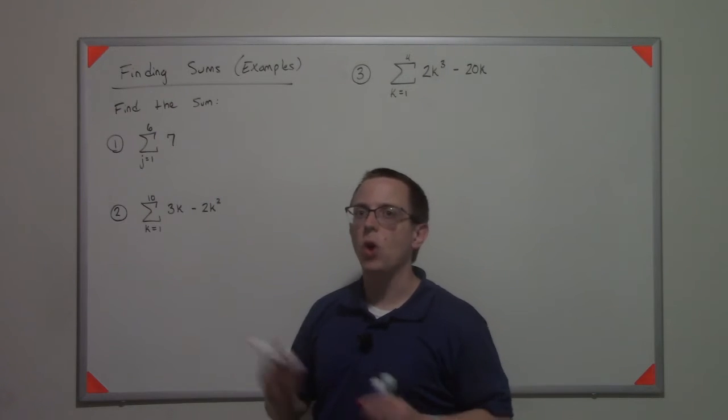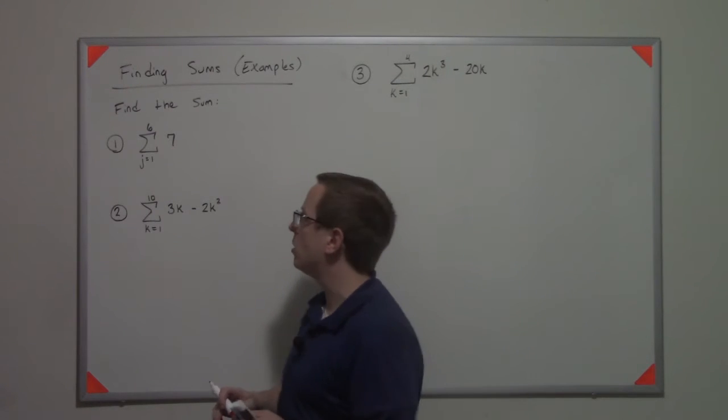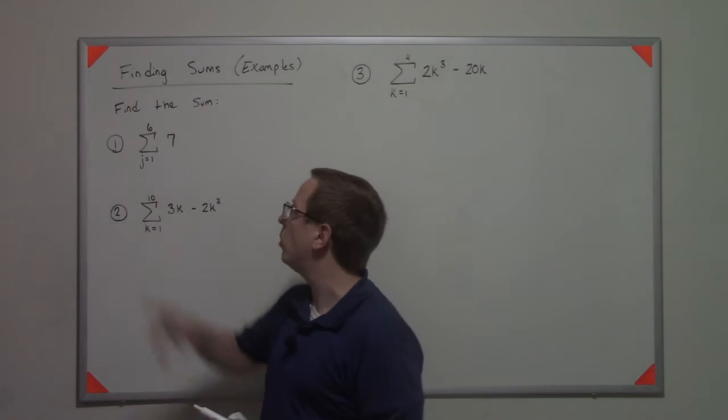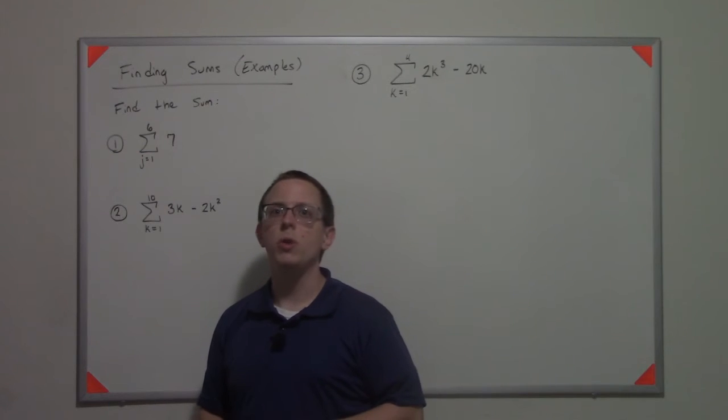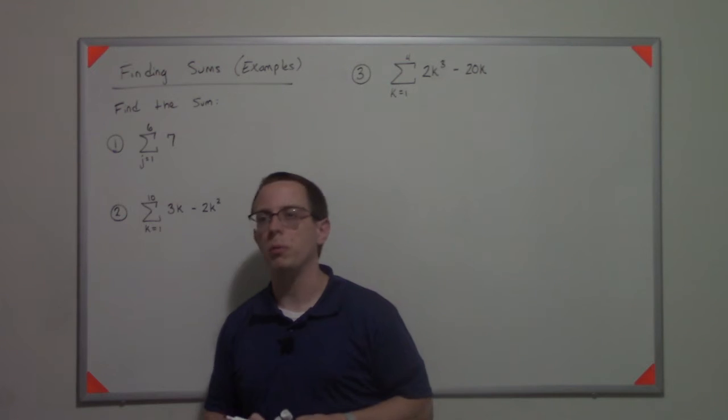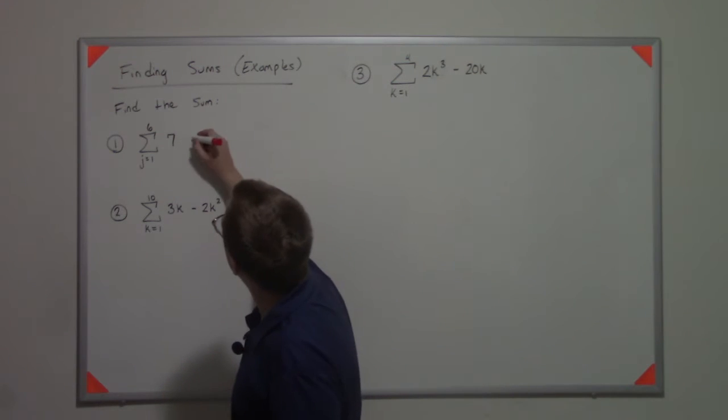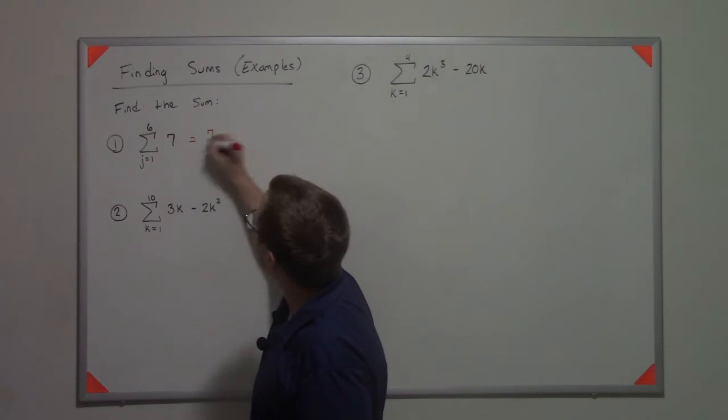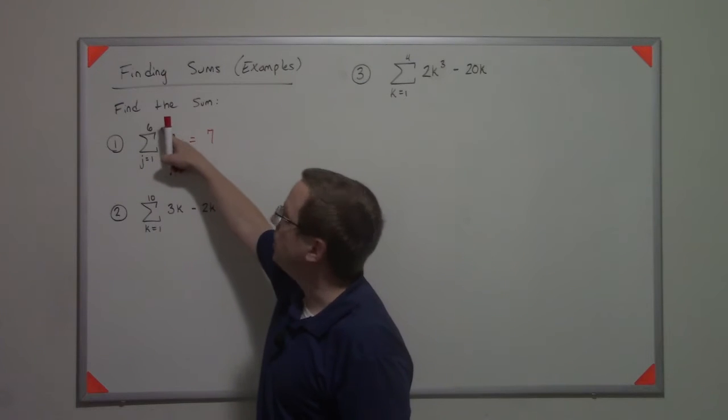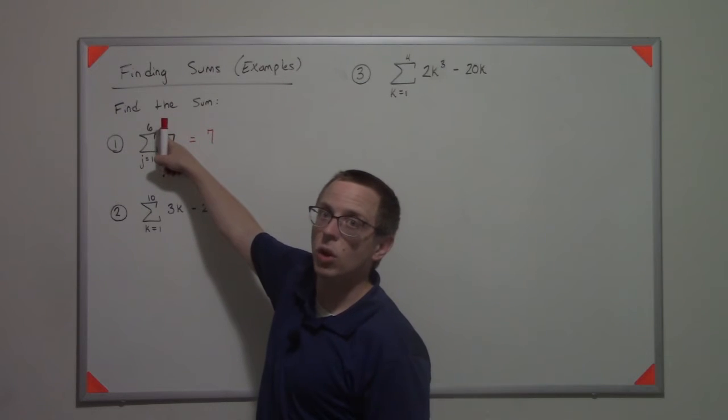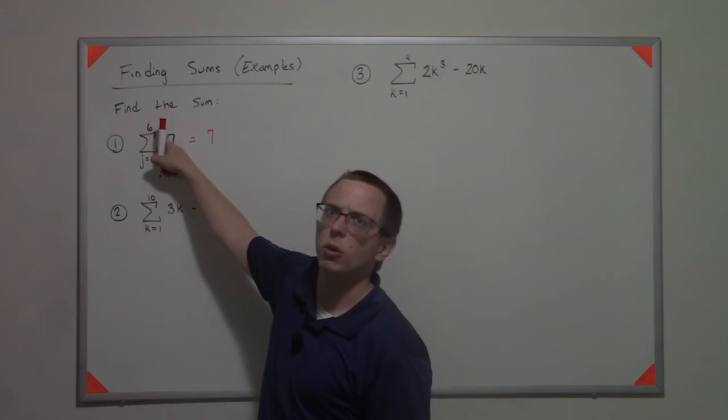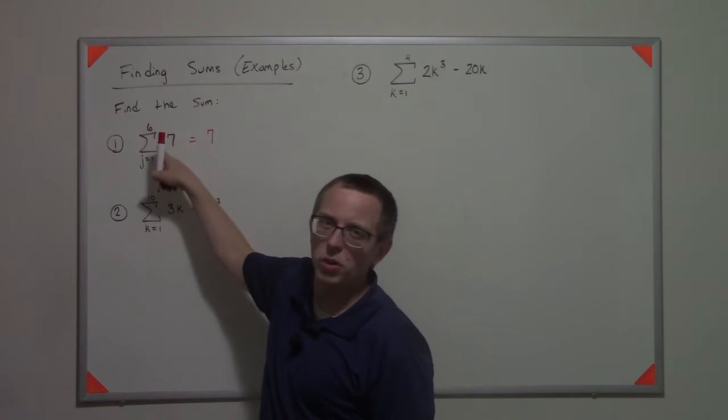If it's only a constant, we're only summing a constant, we can do it two ways. One, we can pull it out front. Or two, we can use that constant formula that says this is equal to the constant times the difference of the lower and the upper plus one. It's really the total number of terms.